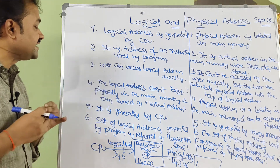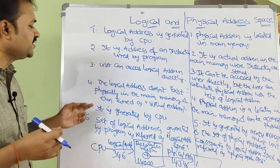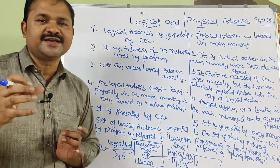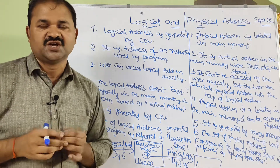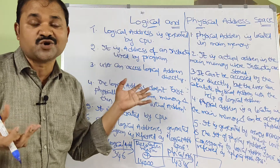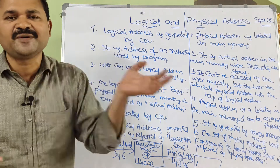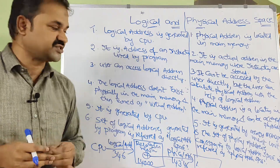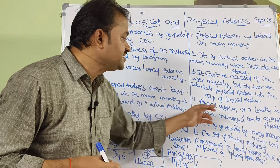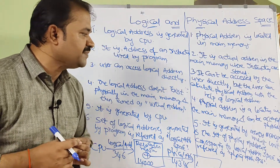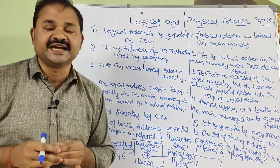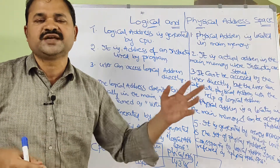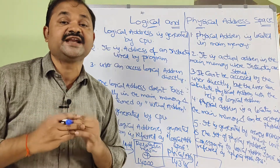The logical address doesn't exist physically in the main memory and is thus termed as virtual address. So logical address can also be called a virtual address — virtual means not real, meaning that logical address will not be available in the main memory. Whereas physical address is a location in the main memory and can be accessed physically, so those are called physical addresses.